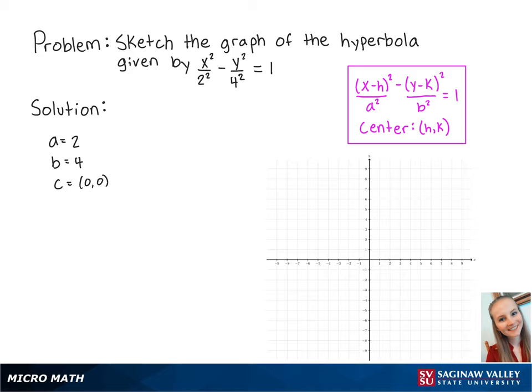Now we will graph the relevant points. The center is at 0, 0, and since a is equal to 2, we're going to graph two points, 2 to the left and 2 to the right of the center. So the first point is at negative 2, 0, and the second point is at 2, 0.